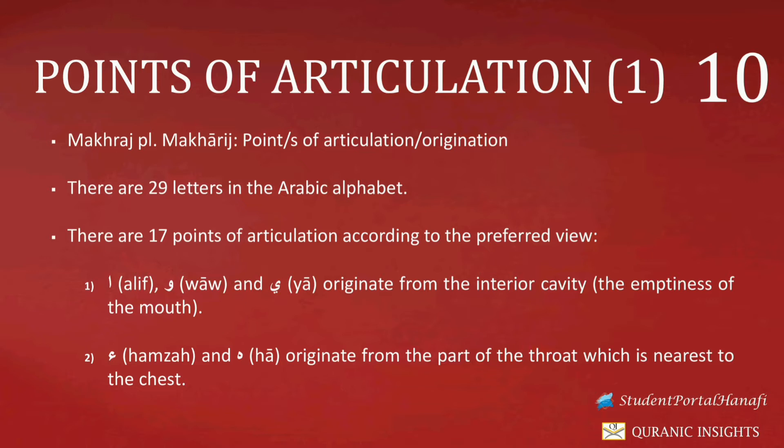An Alif refers to the first letter of the Arabic language when it appears without any harakah or without a sukoon. So if we have the first letter of the Arabic language appearing with either a fathah above it, a dhamma above it, a kasra beneath it, or a sukoon above it, this will not be termed as an Alif. Whenever we have the first letter appearing without a harakah — i.e., a diacritical point — and without a sukoon, it will then be referred to as an Alif.